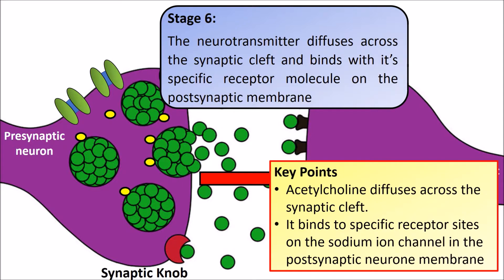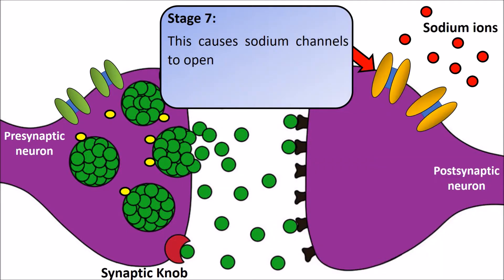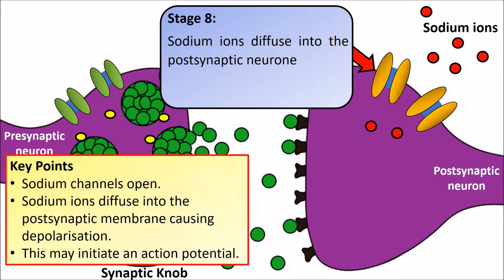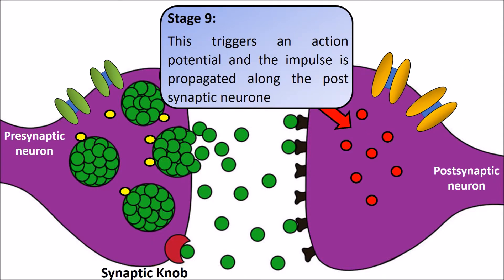This causes the sodium channels to open. Sodium ions then move down a concentration gradient and enter the postsynaptic neuron. This causes a depolarization in the membrane, and this may — not always — initiate an action potential. This triggers an action potential to be propagated, meaning it moves down the postsynaptic neuron.